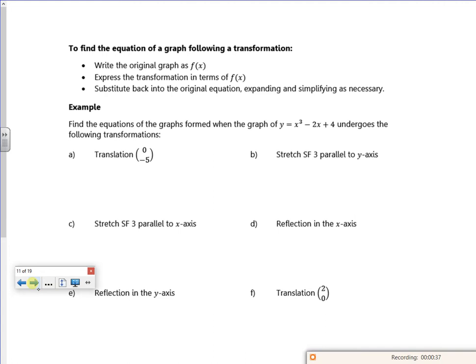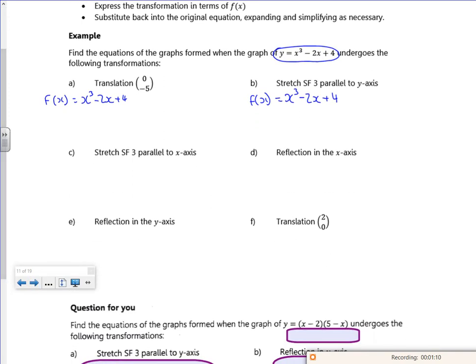To find the equation of a graph following a transformation. So you'll look at the original graph, then put the transformation and then substitute back in. Right, so there's my original graph. So for each of those you have to write down the original graph. So f of x is x cubed minus 2x plus 4. So I might as well do that for all of them. Because it shows your starting point before you get to your end point.